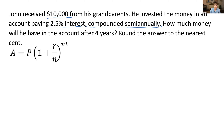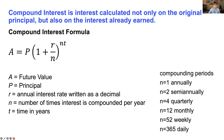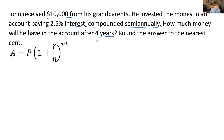How much money will he have in the account after four years? Round the answer to the nearest cent. Here is the compound interest formula. A stands for the future value, or the total amount of money in the account after so many years. P is the principal, r is the interest rate, and n — in the denominator and also in the power — is the number of times the interest is compounded per year. If it's compounded semi-annually, n equals two, meaning the interest is compounded twice per year.